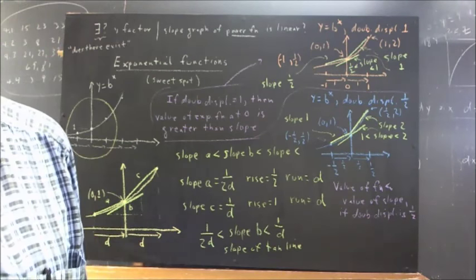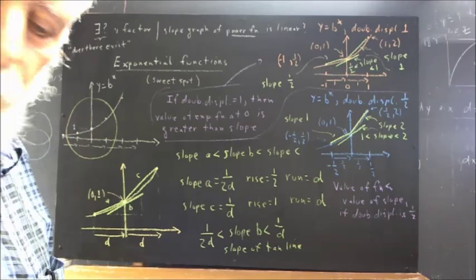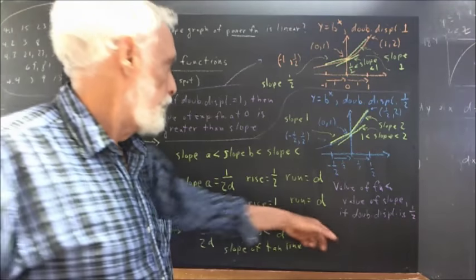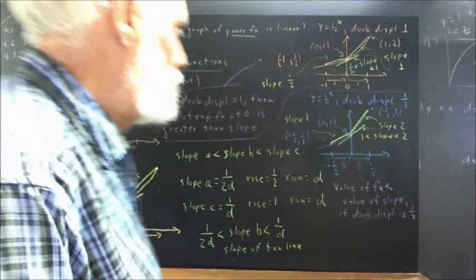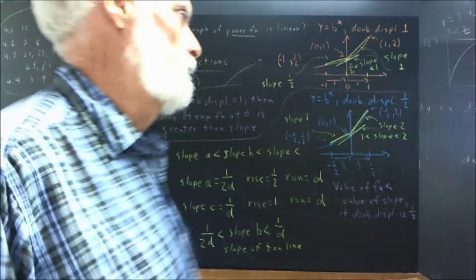Okay, so I'm going to conjecture that for some doubling displacement between 1 half and 1, the value of the function is equal to the value of the slope.